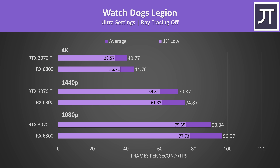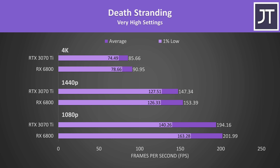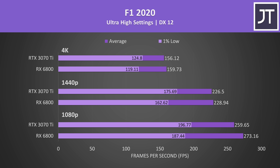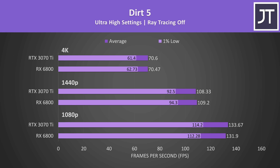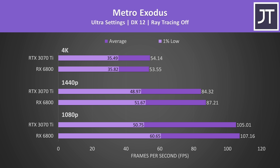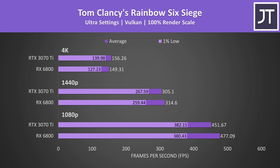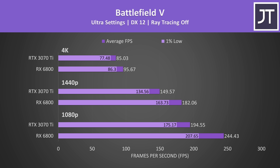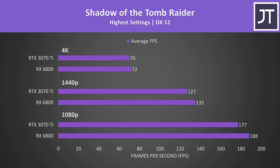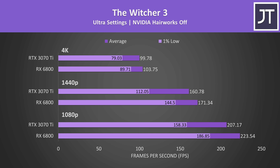I'll briefly skip through the results for the other 8 games tested. I've already talked through 9 titles that were either mostly in favor of Nvidia or AMD to illustrate that results can really depend on the game and the resolution. In comparison the rest of these games generally saw smaller differences, so feel free to pause for a closer look. Let's check out the average differences at all 3 resolutions next.